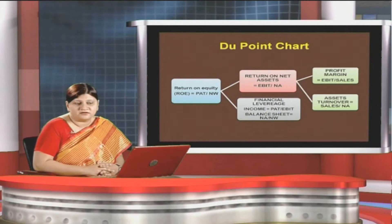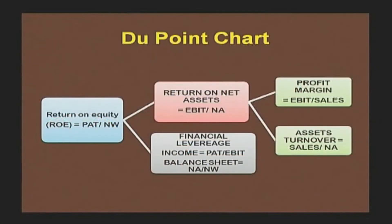We have presented it in a graphical manner, moving from the right-hand side to come to the left side to find out return on equity. First, profit margin is computed as EBIT divided by sales; then asset turnover is computed as Sales / NA (net assets). When both these factors are computed, we reach a situation where we have return on net assets, that is EBIT / NA.